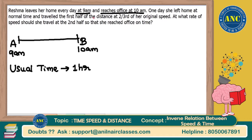That means for the entire total distance, if she is taking one hour, to reach half of the distance she will take half an hour. That means she will be at the midpoint of her distance at half an hour from 9 o'clock, which is 9:30 am, if she travels at usual speed. This is the first statement.